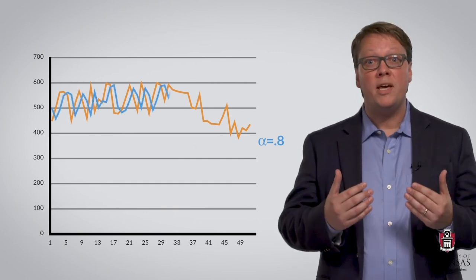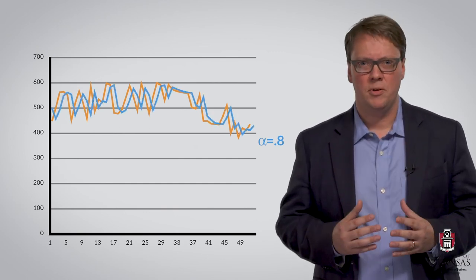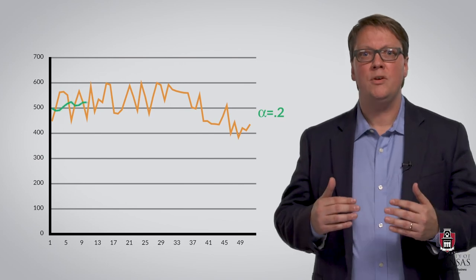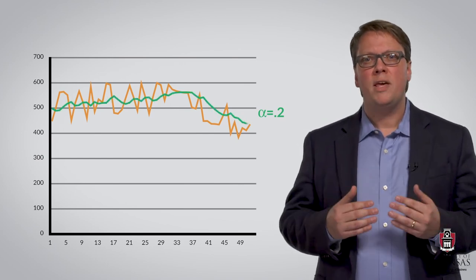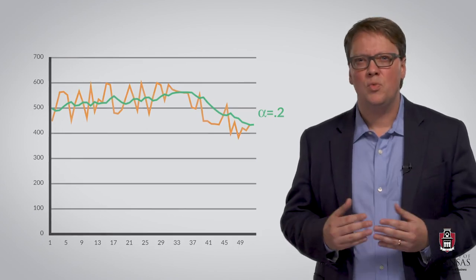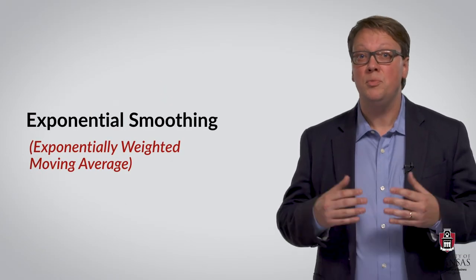So let me show you what it looks like when we apply the exponential smoothing method for alpha values of 0.8 and 0.2 to our data set. When we use a relatively large weighting factor alpha, our forecast will be heavily influenced by more recent demand observations. On the other hand, if we use a relatively low weighting factor, our forecast will smooth out short-term fluctuations in demand. This is why we call it exponential smoothing.